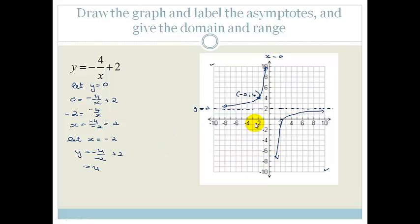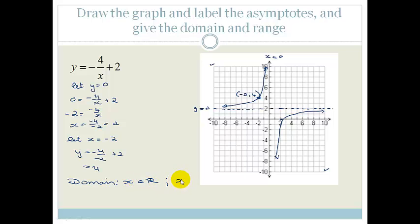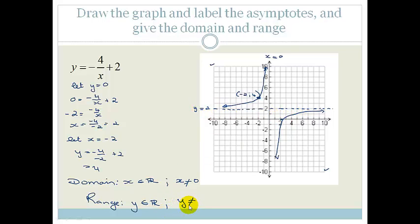The domain is x is an element of real values, but x ≠ 0. The range is y is an element of real values, but y ≠ 2. So far we've only shifted this graph up or down — a vertical shift. Now we're going to do something new.